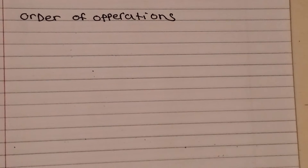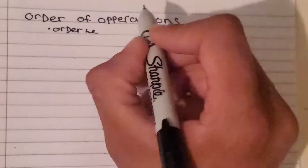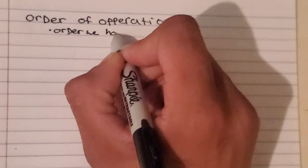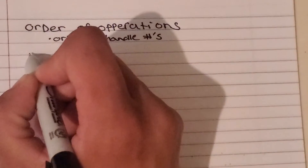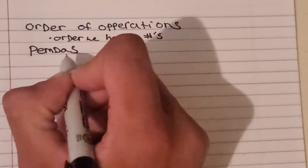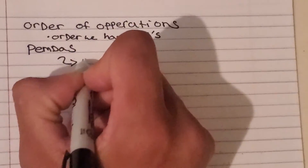So in a previous video, we talked about the order of operations, and we did examples of them. We said that it's the order we handle numbers if we're trying to add, subtract, multiply, divide, or even take exponents. And we said that order follows the acronym PEMDAS. Some of you guys might have seen it as GEMDAS.